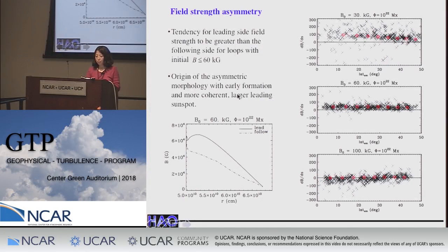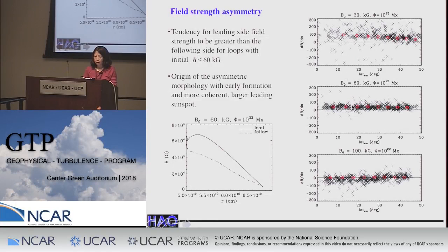Another asymmetry that develops in emerging flux loops is that the leading side tends to have a stronger field compared to the following side. The gradient of B over the apex along the loop going from the following to the leading side is systematically positive for loops with initial field strength of about 60 kilogauss or weaker, meaning field strength increases from following to leading leg at all depths. This was argued to be a possible cause for the origin of the asymmetric morphology of active regions, where the leading sunspot tends to be more coherent because the leading leg is stronger.